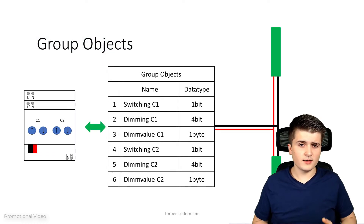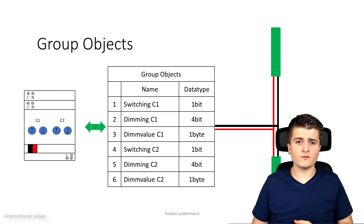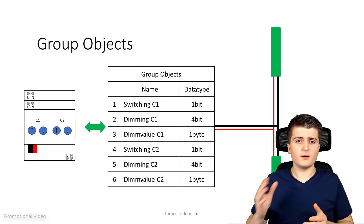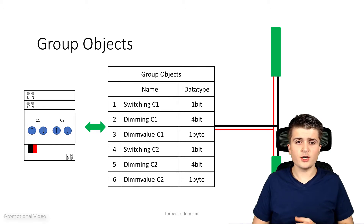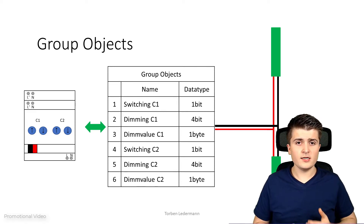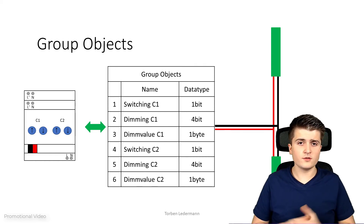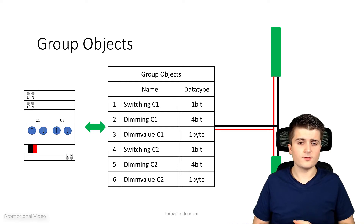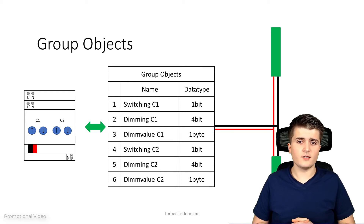This may sound more complicated than it really is. Here we have the example of a dimming actuator with two dimming outputs. As you can see, we have the group object in the middle between the bus wire and the bus device. For each channel we now have multiple group objects, each for their own function. First of all, we have a group object for switching channel one or two on and off. Then we have a group object for dimming channel one or two. And we also have a group object for the dim value, where we can specify a value and the dimming actuator turns the light to that specified value.